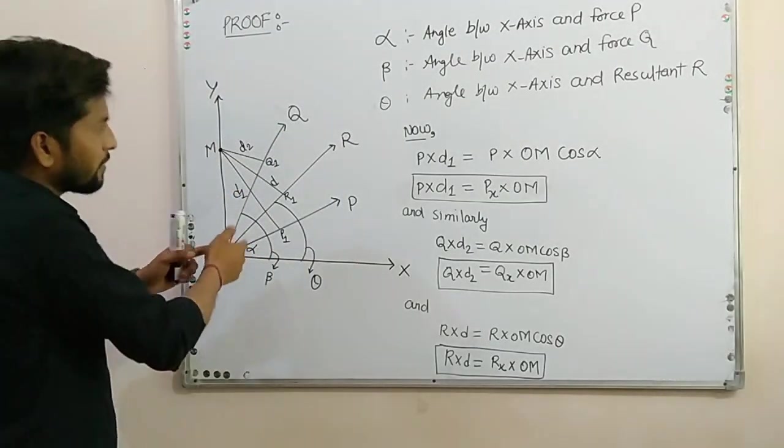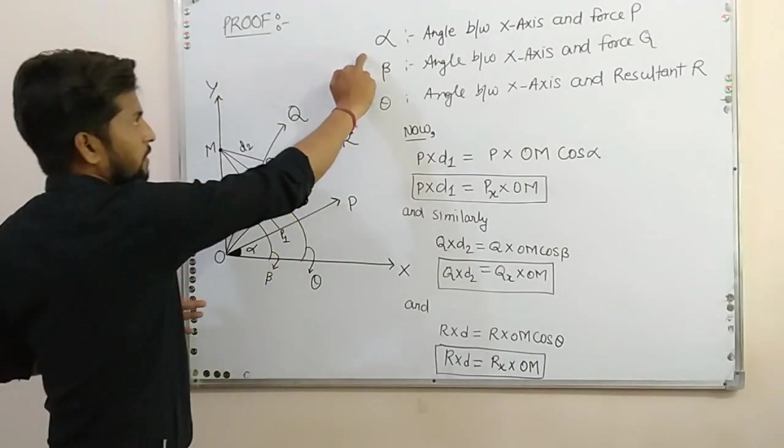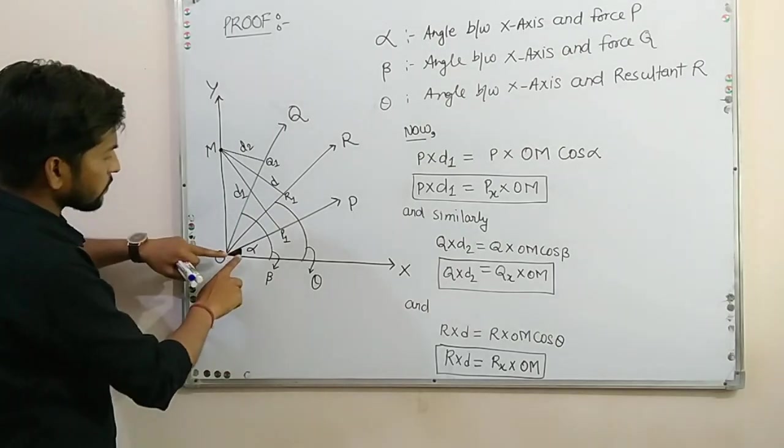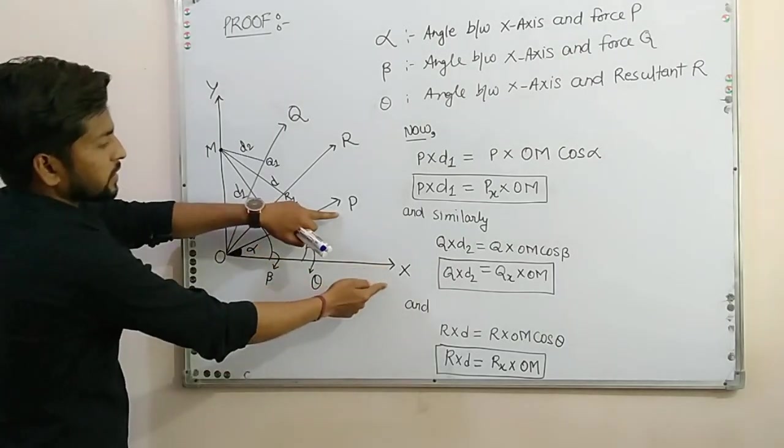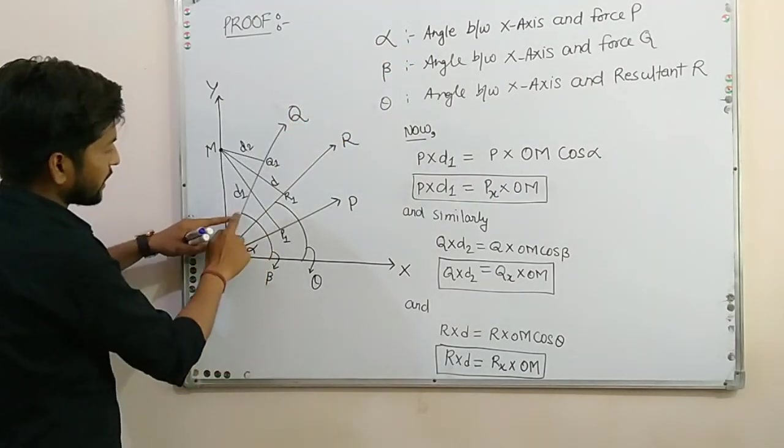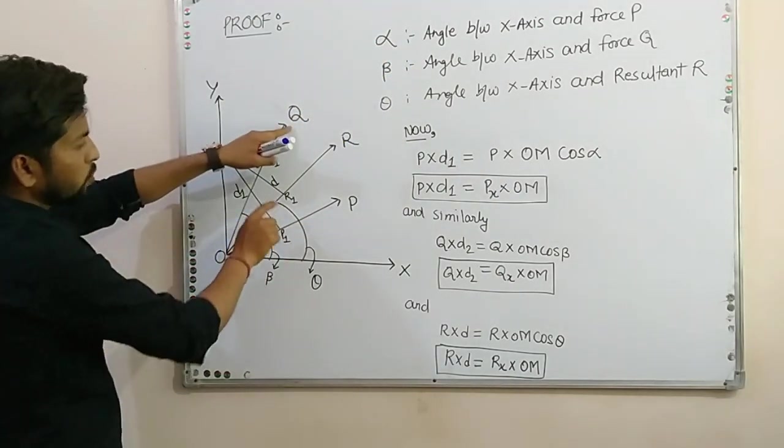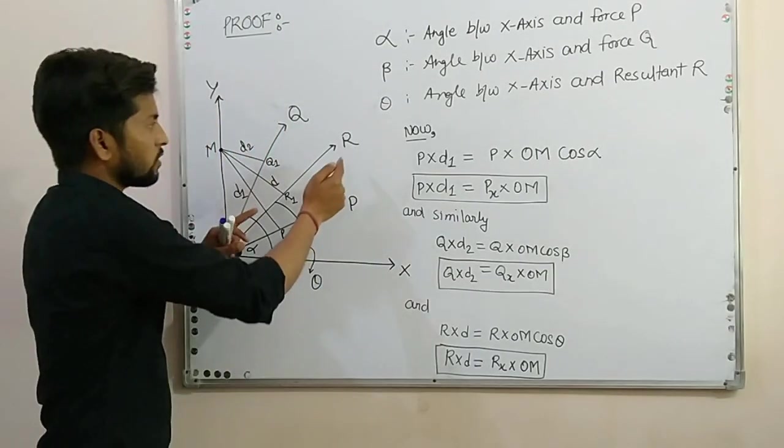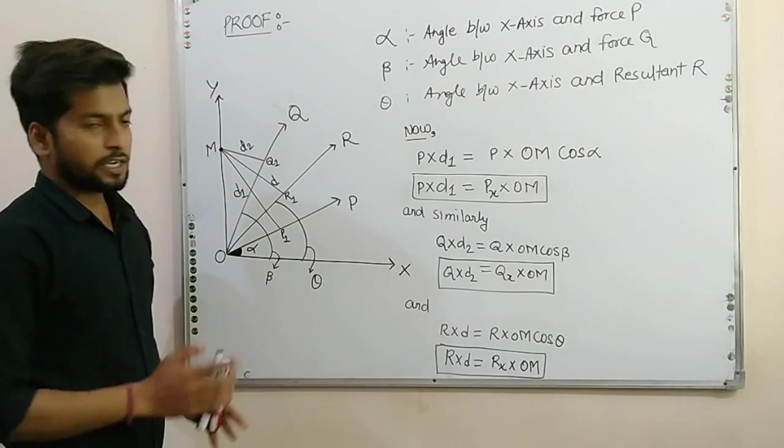So we have assumed some angles here. Alpha, which angle is alpha? Alpha is the angle which P makes with X axis. Beta is the angle which Q makes with X axis. And theta is the angle which R makes with X axis.